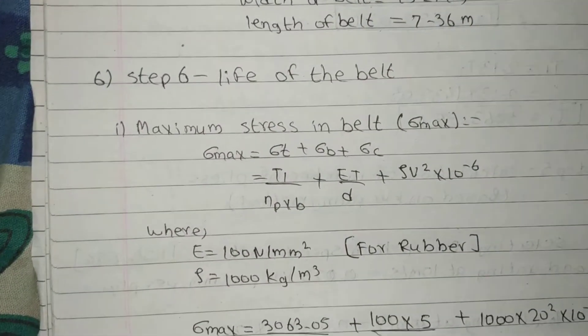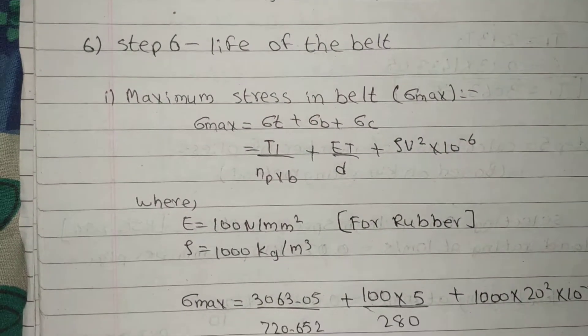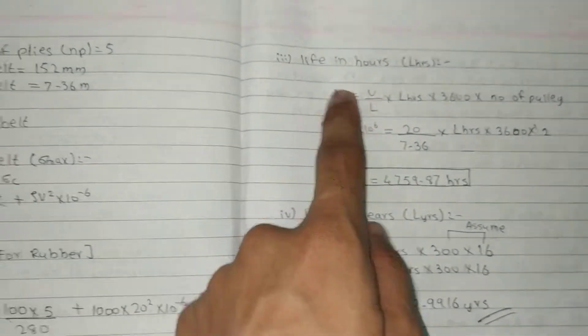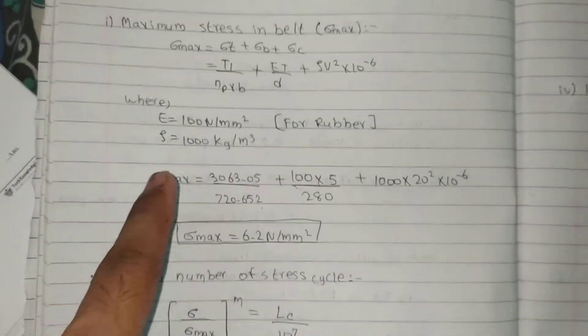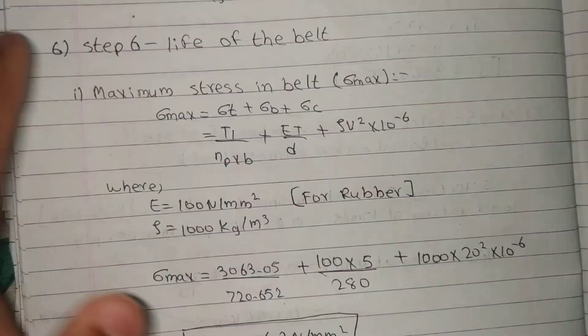Step 6: Life of belt. Life of belt. Life is given. First step was this, second step was this, third step was this, fourth step was this. Life of belt is calculated. First step is this.